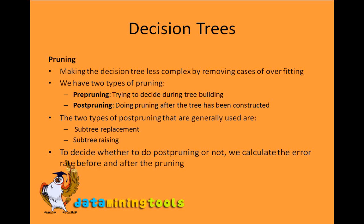To decide whether to do pruning or not — for example in pre-pruning — we calculate the error rate before the pruning and after the pruning. If the error rate after pruning is greater than before, we don't prune; otherwise we go ahead with the pruning.